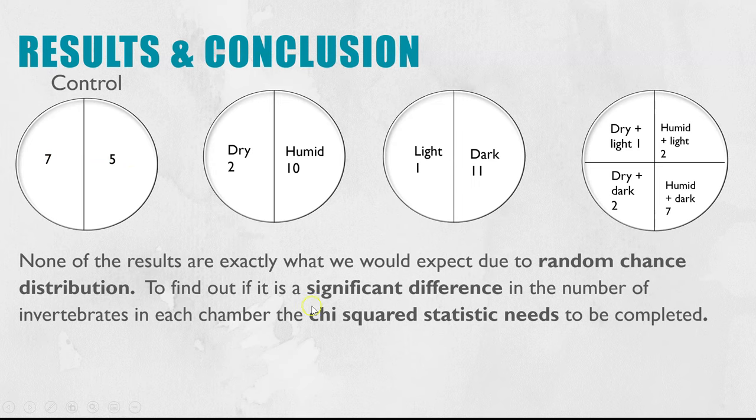What we need to find out is: the differences that we see between each of these chambers, is it significant or not? To work that out we have to do a statistic and in this case it'd be the chi-squared statistic. I'm not actually going to go through that in this video because I have a whole other video on that, so if you need to recap how you would do chi-squared I'll link it at the top and you can go and see the chi-squared video.